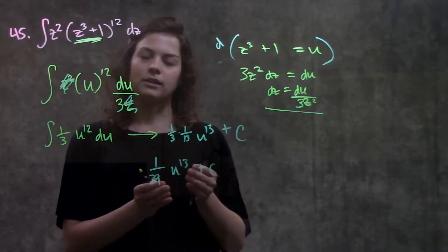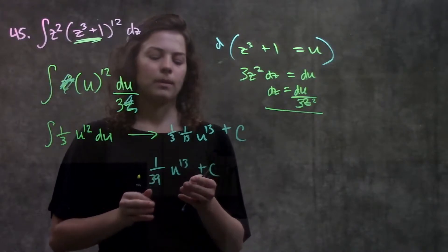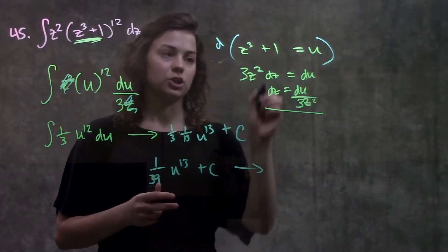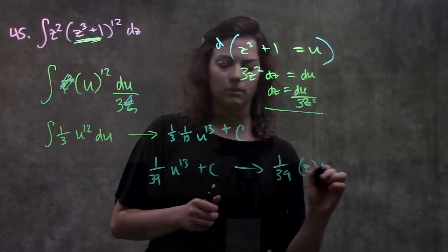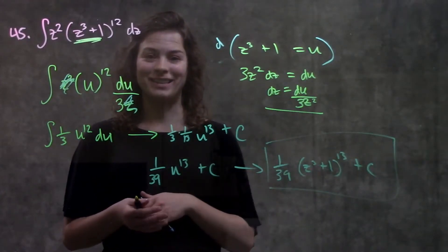Remember, they weren't actually interested in u. They're interested in this z function. So at this point, I'm just going to plug in whatever I set u equal to. So now I have my answer in terms of z. So this becomes 1 over 39, z cubed plus 1 to the 13th plus c. And that's it.